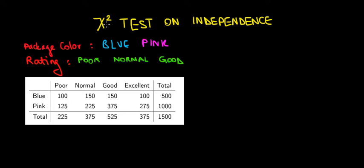Let's work on the concept of the chi-square test of independence. In this first video we're going to work on the intuition behind the test, and in the next video we're going to work on the math behind it.